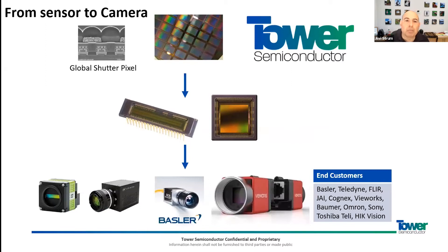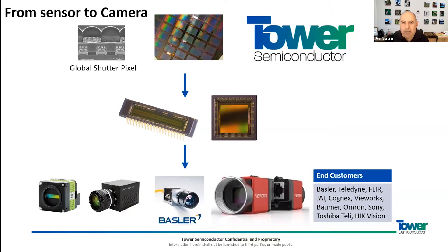Now, if we talk about the global shutter pixel — and I'll explain in a minute why global shutter is so important for sports applications — we are the manufacturer of the wafers, the inventors of the pixels and the pixel technology. On the left-hand side you can see the cross-section of a global shutter pixel that we make, and in the middle a snapshot of a portion of a wafer showing many sensors on one wafer.